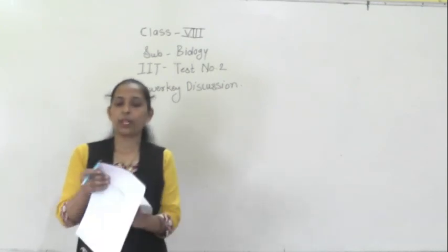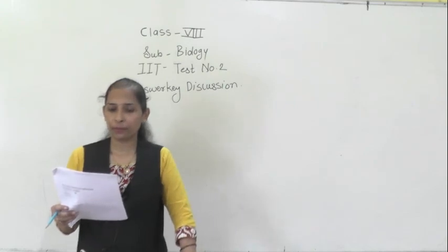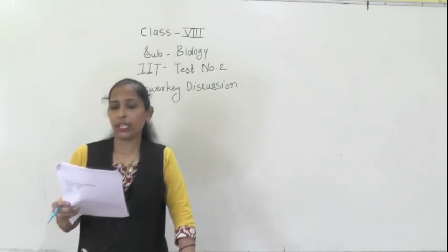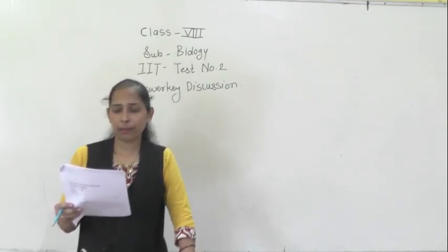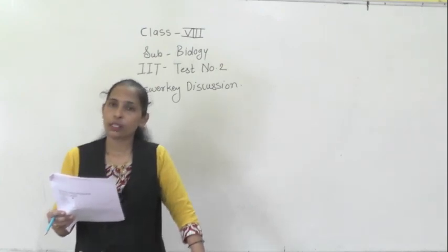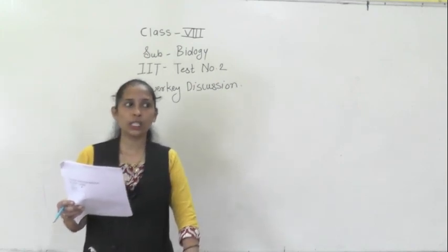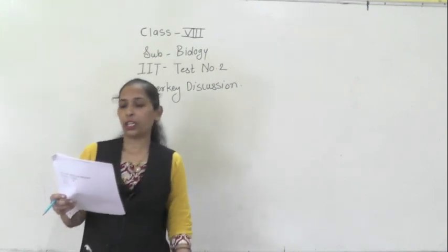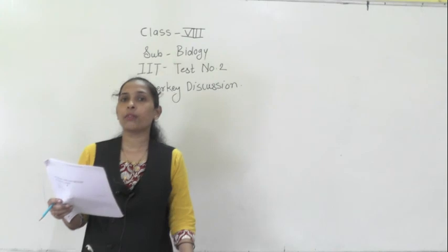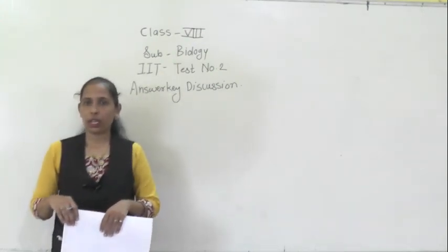Question number twenty-five: the jelly-like substance inside the plasma membrane in which all cell organelles are floating is called cytoplasm — option number one is correct. We have now completed all answers and discussions. Thank you.